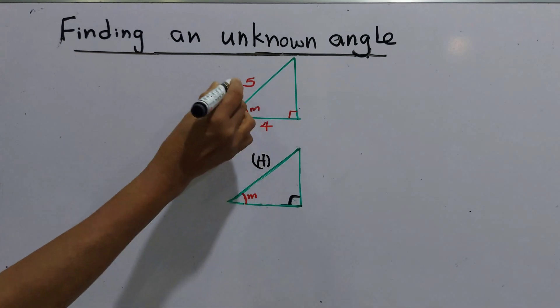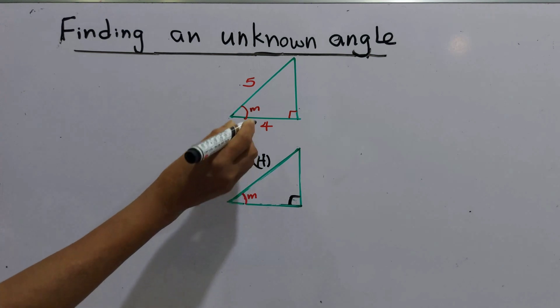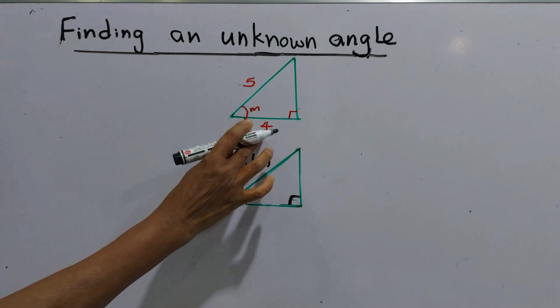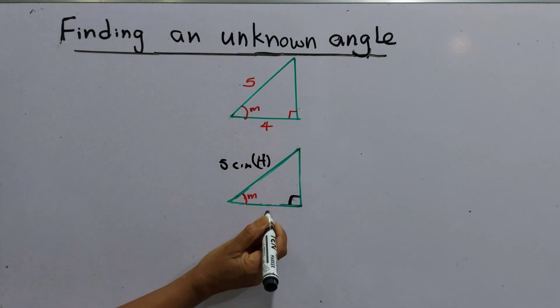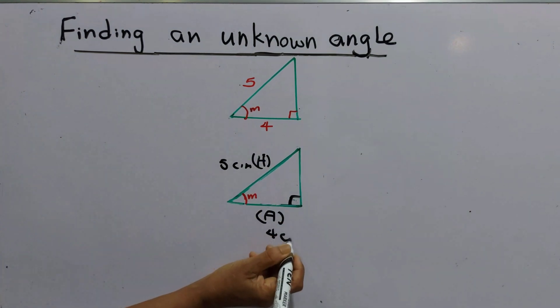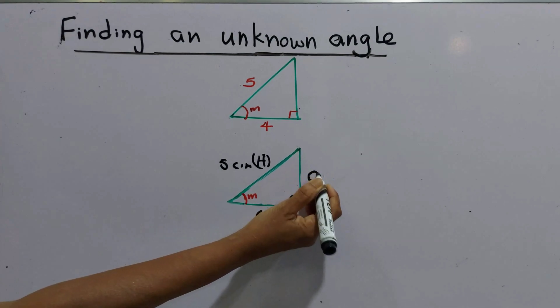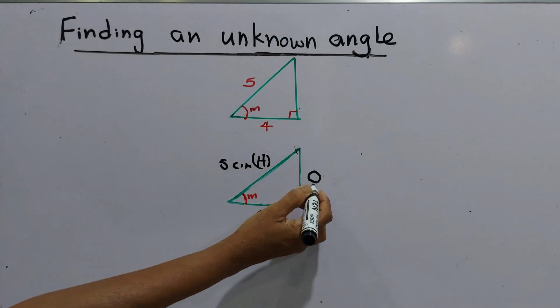We already know the value of H that is five centimeters and this is the adjacent we name it as A. Value is given as four centimeters. Opposite side is O. We do not know about the value of this.